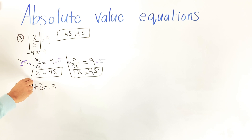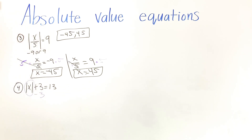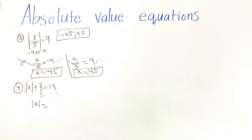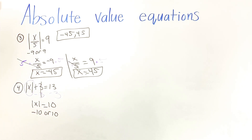For number four, we need to isolate the absolute value of x first. Since there's a positive 3, we subtract 3 from both sides. This cancels and leaves the absolute value of x. We have two different signs so we subtract: 13 minus 3 equals 10. Now the absolute value is by itself, giving us negative 10 or positive 10 as the answer.